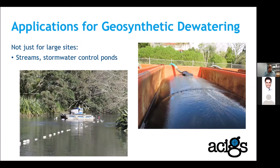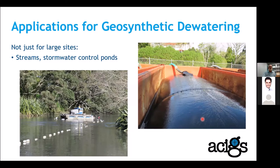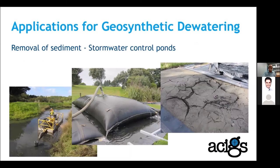That was a large project, but this sort of system can be used for smaller projects as well. We're seeing more application for silting of streams and stormwater control ponds and systems where just a small dredge is able to get into difficult sites, often pumping into small containers housed in hook bins. After even a week's dewatering, they can be taken to landfill. Another example shows a small temporary compound pumped and allowed to dewater for a couple of months, then excavated and removed.